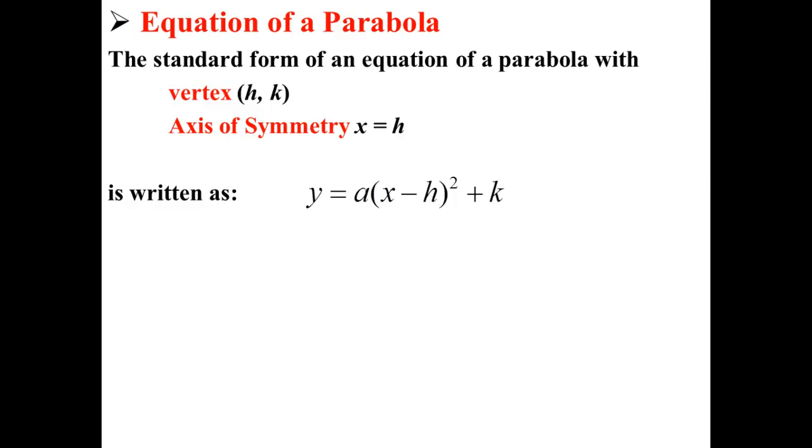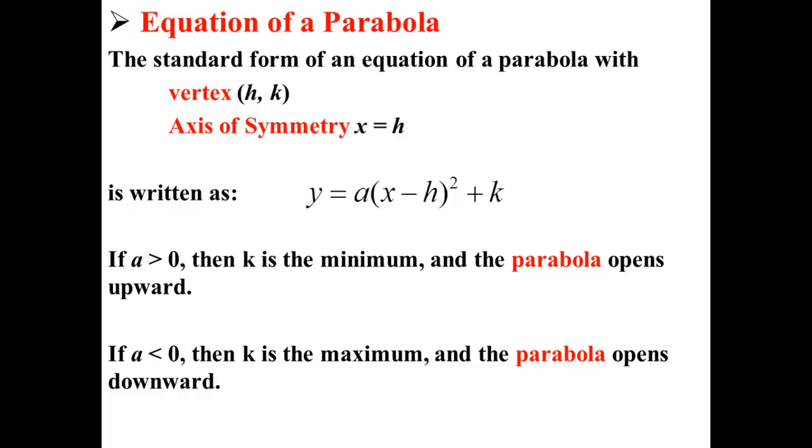If a > 0, that is if a is positive, then k is the minimum and the parabola opens upward. If a < 0, that is if a is negative, then k is the maximum and the parabola opens downward.